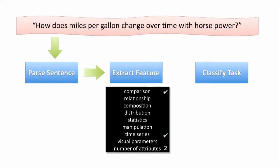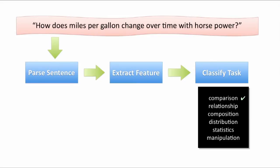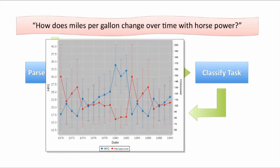Based on this set of features, a supervised learning algorithm identifies the intended visual analytic task which is used to guide a graph generation algorithm in determining the appropriate visualization to present to the user.